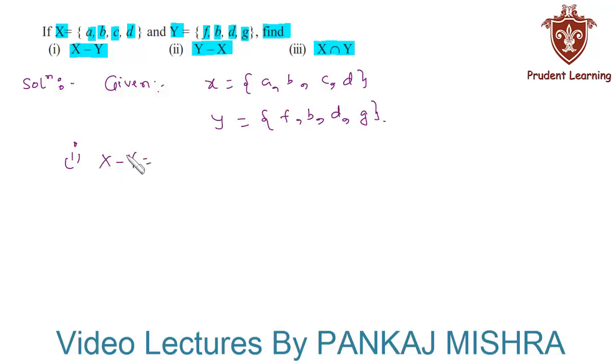In our first section we need to find x minus y. We know that x minus y means set of all the elements that are present in x but not in y. So the elements that are there in x but not in y are a and c. So we have a set containing elements a and c.